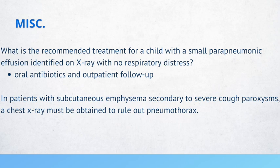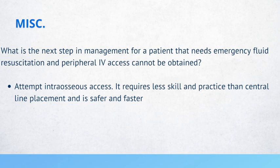Another high-yield point: in patients with subcutaneous emphysema secondary to severe cough, a chest x-ray must be obtained to rule out a pneumothorax. What is the next step in management for a patient that needs emergency fluid resuscitation and peripheral IV access cannot be obtained? Attempt intraosseous access — it requires less skill and practice than central line placement and is safer and faster.